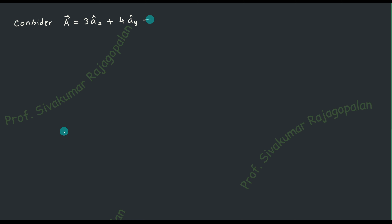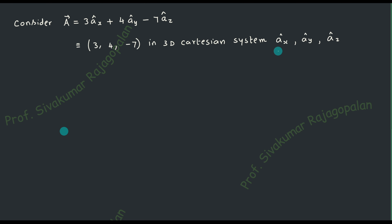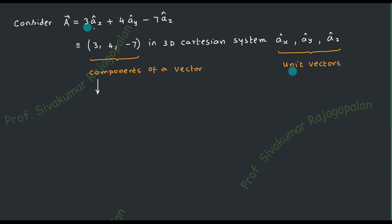Let us start with a basic example. Consider a particular vector in three-dimensional space: 3 times i + 4 times j − 7 times k. The components are 3, 4, and −7 and the unit vectors are ax, ay, and az. We are going to separate the unit vectors from the components — this is very important. We don't want to mix the unit vector with the components. So unit vectors will come separately, components will come separately.